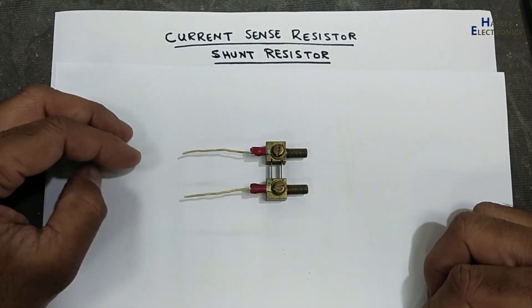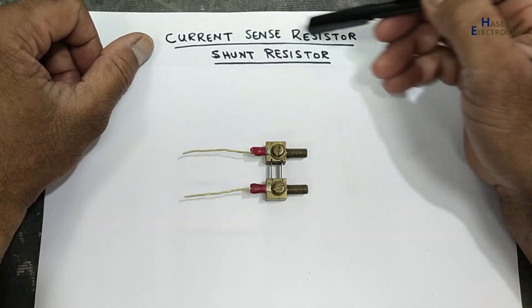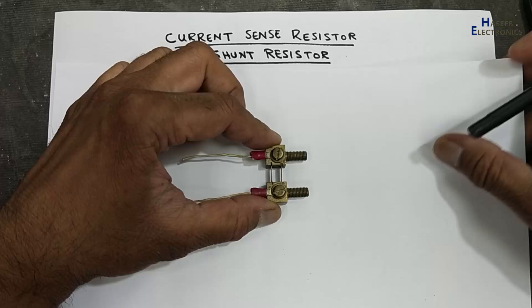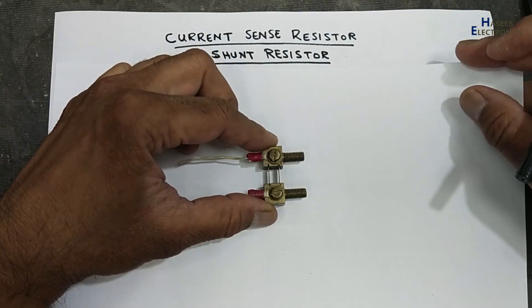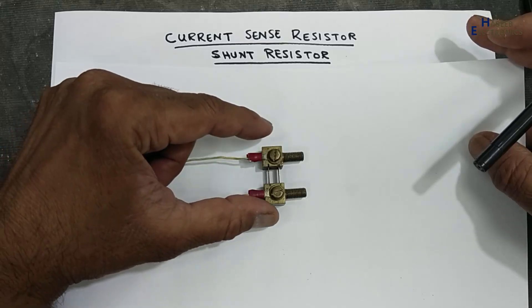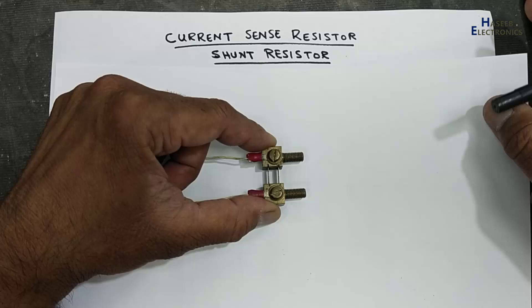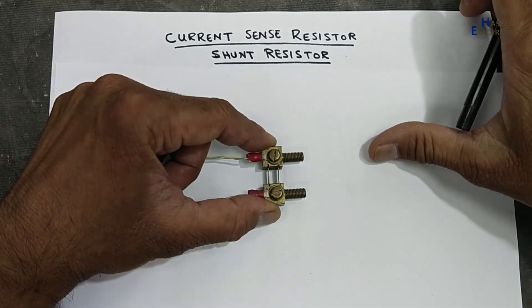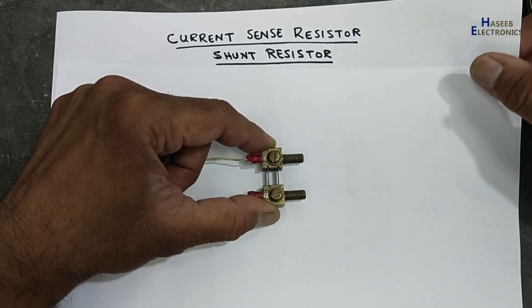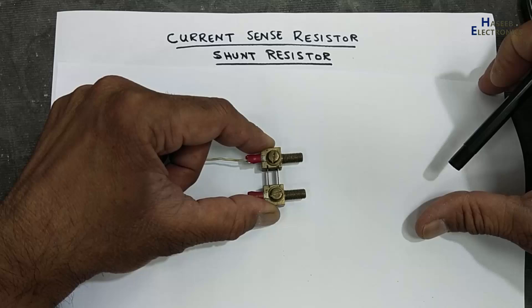Assalamualaikum warahmatullahi wabarakatuhu. Welcome back to my channel. Today we discuss the current sense resistor or shunt resistor. When we want to measure current in a DC circuit, a current sense resistor is most commonly used. Although it is used in AC circuits as well, most of the time a current transformer (CT) is used for AC circuits, and the current sense resistor is used in DC circuits.